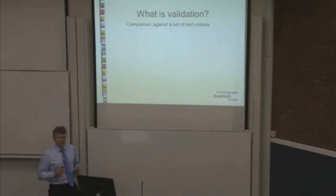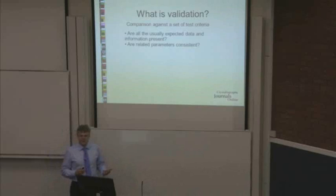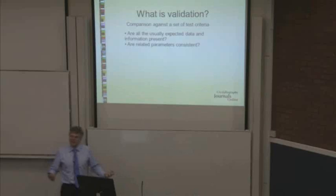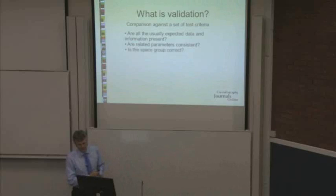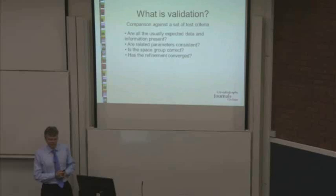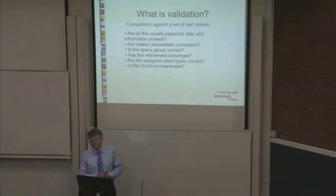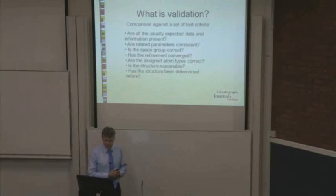What's validation? It's a comparison of your data against a set of test criteria. Simple things like: are the usually expected data and information present — have you got your cell parameters? Are related parameters consistent — does the cell volume match the cell parameters? It doesn't always, or didn't; it does now, but there was a time when it wasn't the case. Is the space group correct? Has the refinement converged? Are the assigned atom types correct? Is the structure reasonable? And going back to duplication — has it been determined before?